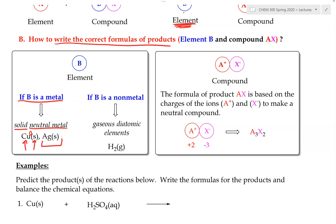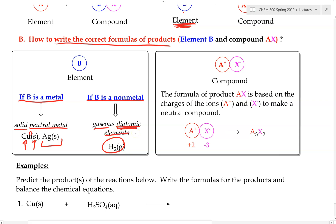If B is a non-metal rather than a metal, the non-metal in elemental form exists as a diatomic element and is a gas. For example, if hydrogen is replaced it becomes H₂ gas. Even if there is only one hydrogen in the original compound, the formula of the product is still H₂, because that is the elemental form of hydrogen. So for any non-metal product, we write the diatomic elemental form.